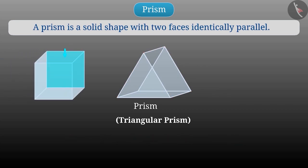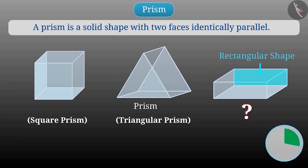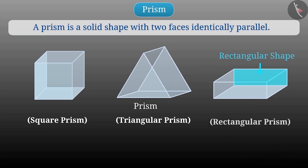Similarly, if the base of this prism is square, then such prism is called square prism. So now tell, if the base of the prism is rectangular, then what shall we call such a prism? You are absolutely right. We will call it rectangular prism.